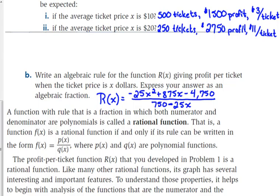If it's $20, then you only sell 250 tickets, but you make $2,750 in profit, and you would make $11 in profit per ticket.